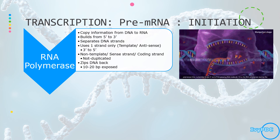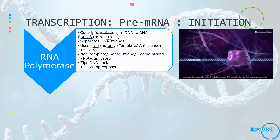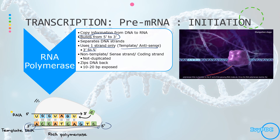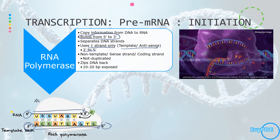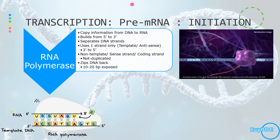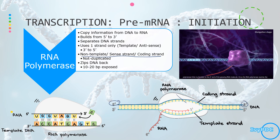The RNA polymerase can only build from the 5' to the 3' direction, like DNA polymerase. Therefore, it uses only one strand of the DNA — the template or anti-sense strand — which runs from 3' to 5'. Since it builds 5' to 3', the RNA polymerase must attach to the 3' end of the template first. The other strand, the non-template, sense, or coding strand, runs 5' to 3' and is not used in transcription.